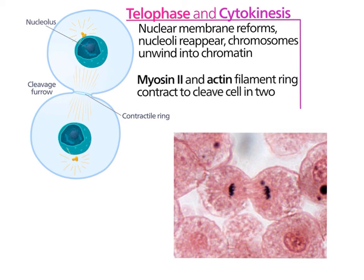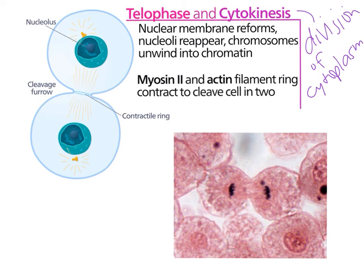Mitosis is the division of the nucleus. Cytokinesis is the division of the cytoplasm, and that occurs differently in plant and animal cells. In animal cells, a protein ring made of myosin and actin constricts and pinches in the membrane, forming what's called a cleavage furrow. You can see that happening here — the membrane is being pinched in, and eventually the two cells would separate, giving us two identical cells.